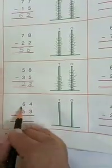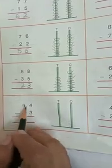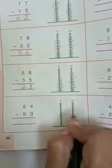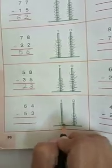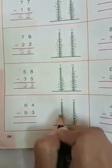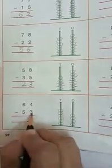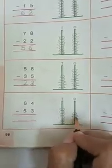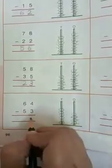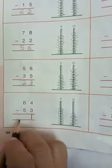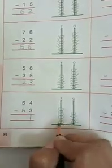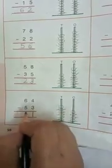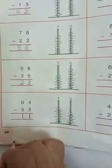Now next: 64 minus 53. 4 ones: 1, 2, 3, 4, and 6 tens. We have to take away 3 ones: 1, 2, 3. Then 5 tens: 1, 2, 3, 4, 5. Answer is 11.